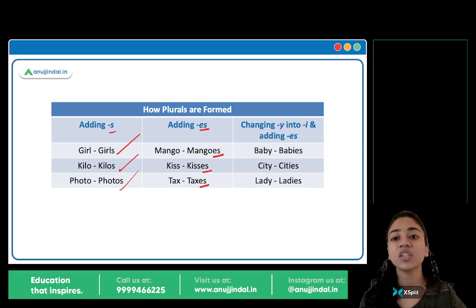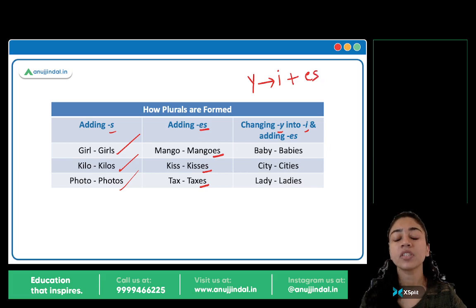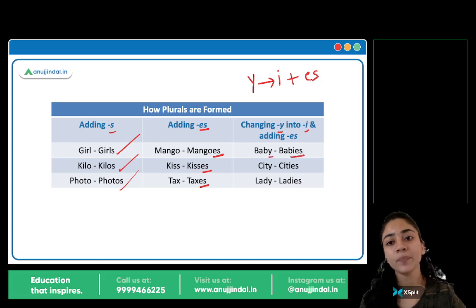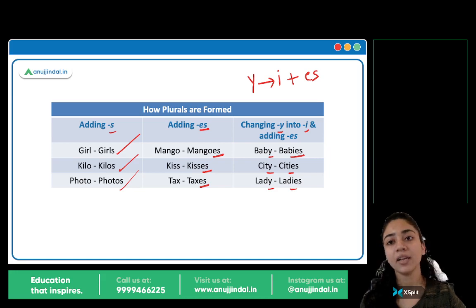In some cases, we change the Y into I — Y hota hai, usay change kar dete hai into I, plus ES add kar diya. Jaise baby → babies, the Y becomes I. City → cities, again the Y changes into I. Lady → ladies. So in all these words, Y becomes I plus ES.